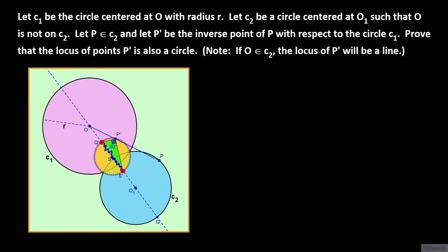This diameter, whose endpoints are Q prime and S prime, is independent of P. Since the endpoints Q prime and S prime of the diameter stay fixed, as P goes around C2, P prime stays on the circle determined only by the diameter Q prime S prime.